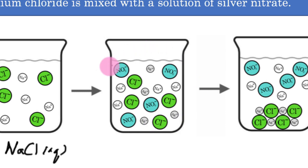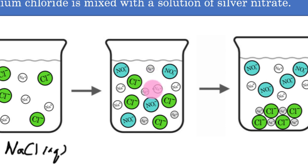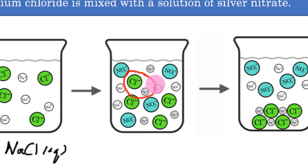When I mix these two solutions together, I get all of these ions together in one solution. The sodium could come in contact with nitrate, silver could come in contact with chloride, silver with nitrate, or sodium with chloride. I already know that silver with nitrate stays aqueous — no solid forms. Sodium with chloride also stays aqueous. Applying the solubility rules, all nitrates and sodiums are going to be aqueous and dissolve in water. So the only real possibility for a solid is silver chloride.